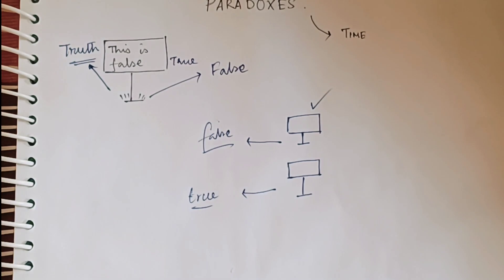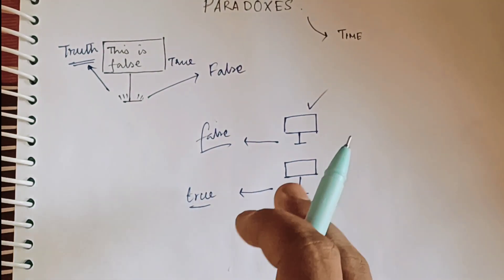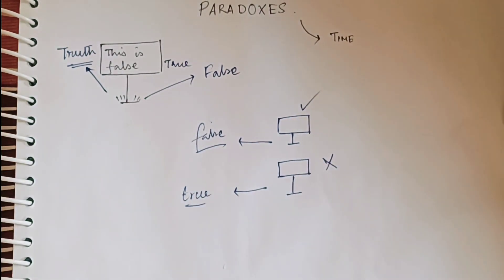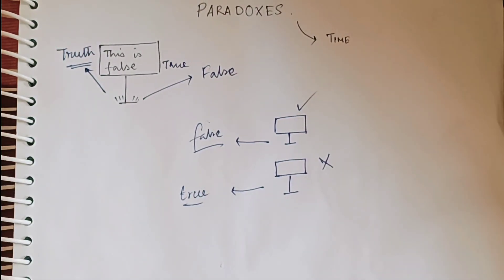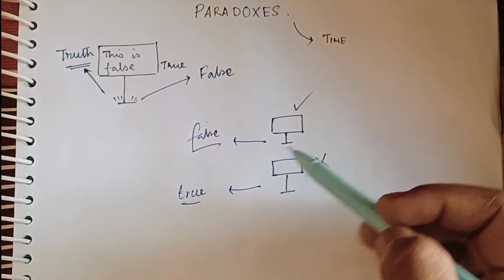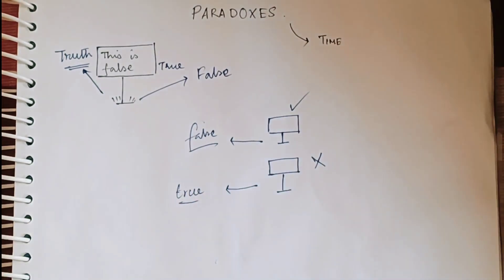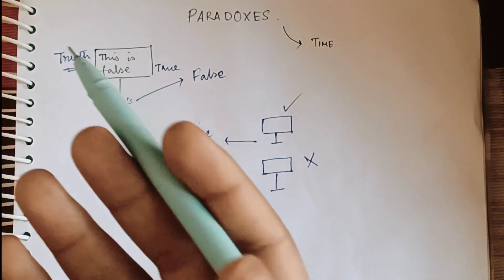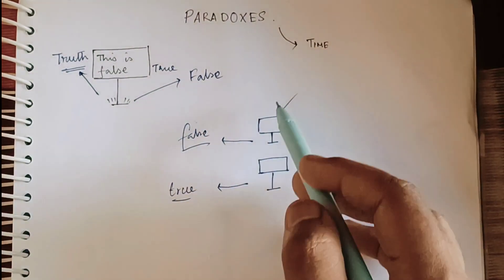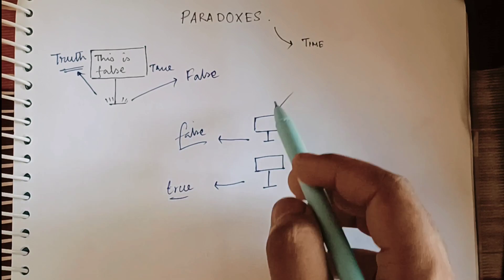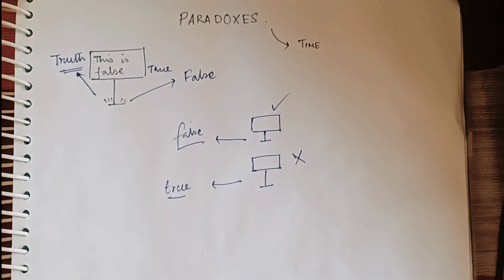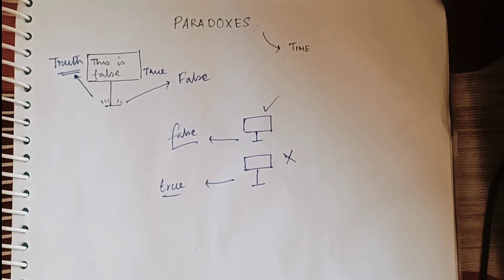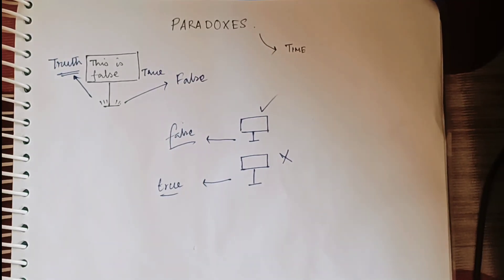The signboard leads to 'True,' but the signboard writes 'This is false' — that means the signboard is wrong. This is what paradox means. Now I've shown you with two different boards. When you combine these two boards into one, the same board is showing you two ways written as one — one will be true, one will be false. I think you've got it up to this point.